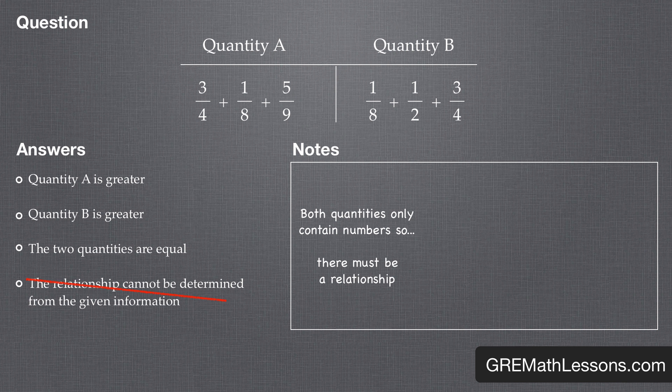The next step is to remove like values—values that equal each other. A quick look at quantity A and B, and we see that both contain one-eighth and three-fourths. Since these values are the same, we can actually eliminate them from the equation. Once we do that, we are only left with one value on each side.